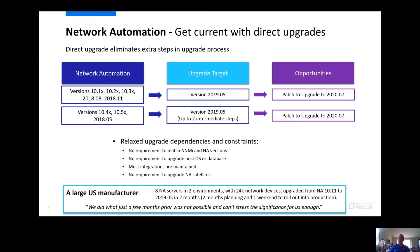NNMi and NA versions don't have to be matched. You can leave the existing host OS and database. Integrations are maintained, and there's no requirement to upgrade NA satellites — similar to regional and global on the NNMi side. If you have satellites out there, you can just leave them in place. One of our largest customers just upgraded eight NA servers in two environments, 24,000 network devices, with two months of planning and one weekend to roll it out. It was extremely stress-relieving as they were able to take this immense deployment, modernize it, and get the new capabilities.